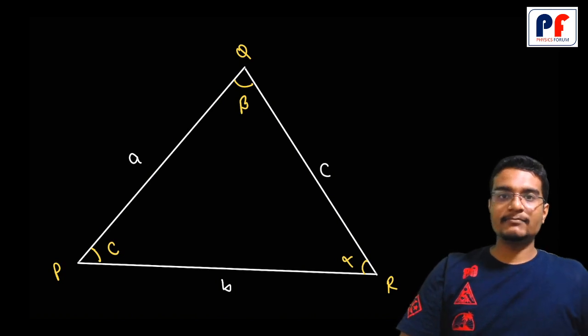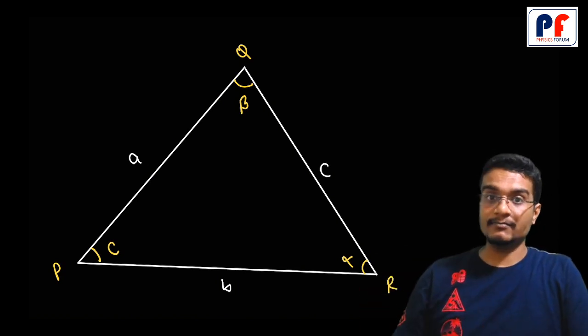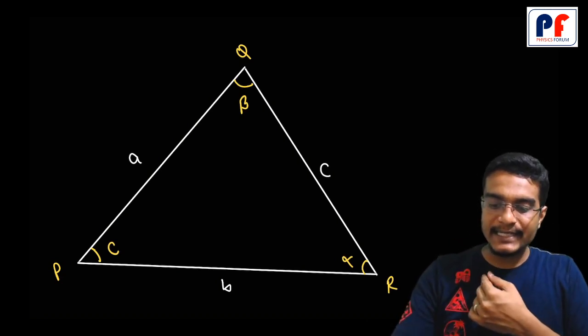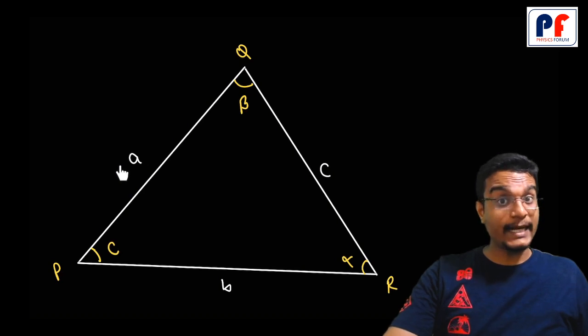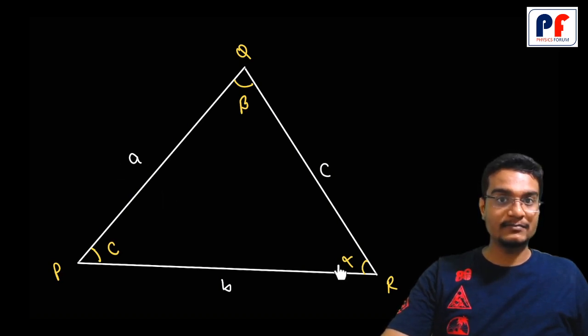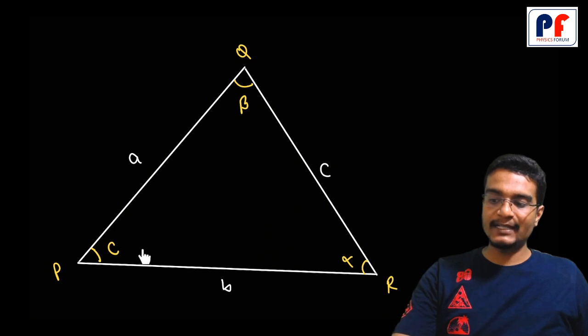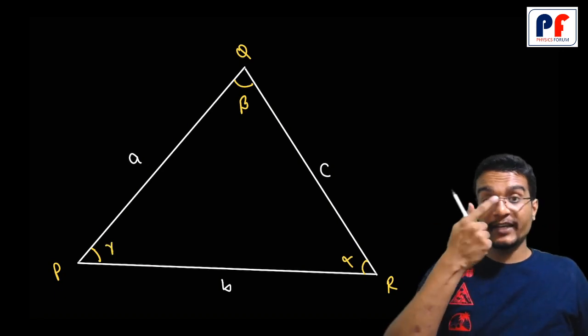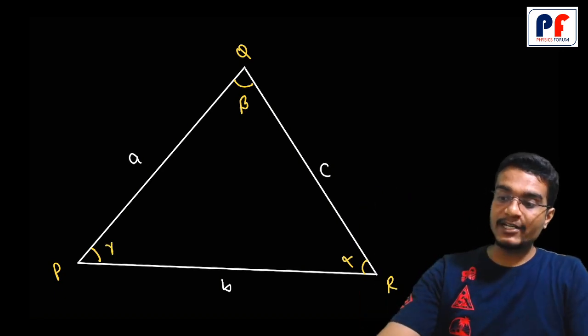You have any triangle—not a right angle triangle. Here I have side A and the exact opposite angle is alpha, side B with the exact opposite angle beta, and side C with the exact opposite angle gamma. Now, proof: what is the sine rule?